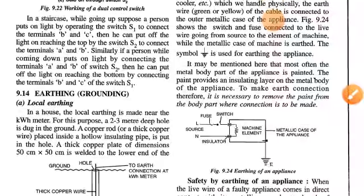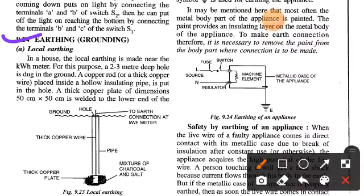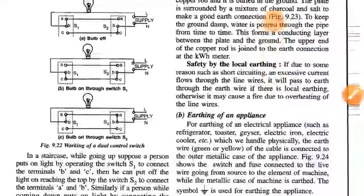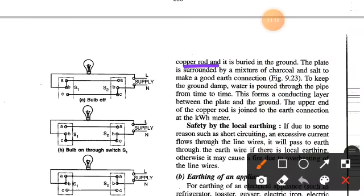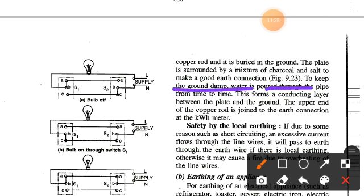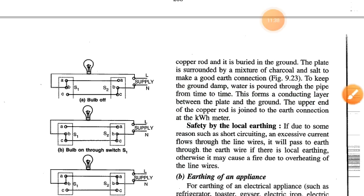Regarding earthing: local earthing in a house is made near the kilowatt-hour meter. For this purpose, a two to three meter deep hole is dug in the ground, and a copper rod of thick copper wire placed inside a hollow insulating pipe is put in the hole. A thick copper plate is welded to the lower end of the copper rod and buried in the ground. The plate is surrounded by a mixture of charcoal and salt to make a good earth connection. To keep the ground damp, water is poured through the pipe from time to time, forming a conducting layer between the plate and the ground. The upper end of the copper rod is joined to the earth connection at the kilowatt-hour meter.